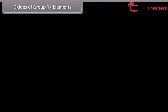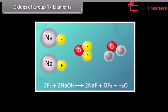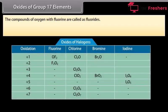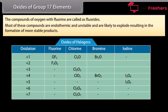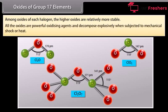Halogens do not combine with oxygen directly. For example, oxygen difluoride OF2 is prepared by action of fluorine on 2% sodium hydroxide solution. The compounds of oxygen with fluorine are called fluorides because fluorine is more electronegative than oxygen. Most of these compounds are endothermic and unstable and are likely to explode. Among oxides of each halogen, the higher oxides are relatively more stable. All oxides are powerful oxidizing agents and decompose explosively when subjected to mechanical shock or heat.